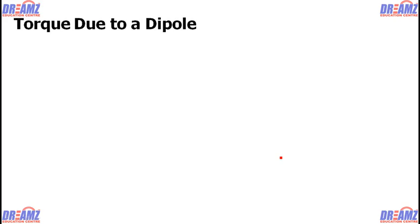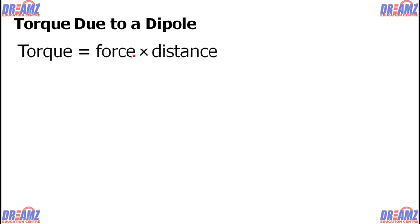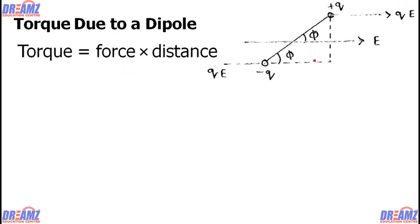If we consider the next topic — torque due to a dipole — torque means force into distance. Consider this diagram: there is a dipole of plus q and minus q placed inside an electric field E. The electric field intensity is E, and on the positive charge there is a force qE in the same direction as E. On the minus q charge, the force value is also qE but in the opposite direction of E. That means there are two forces on the dipole.